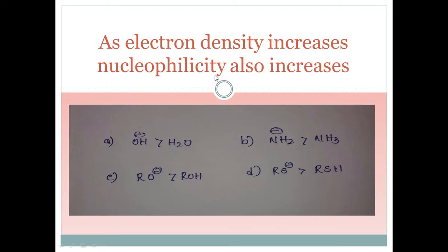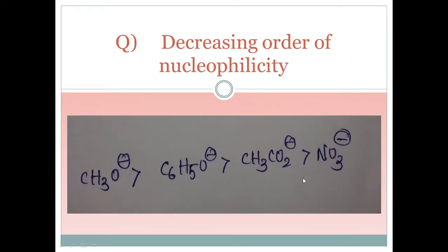As electron density increases — meaning more negative charge or more lone pairs — nucleophilicity increases. OH⁻ is a better nucleophile compared to water. NH₂⁻ is a better nucleophile compared to ammonia (NH₃). RO⁻ is better compared to ROH. RS⁻ is better compared to RSH.